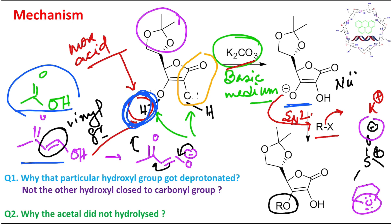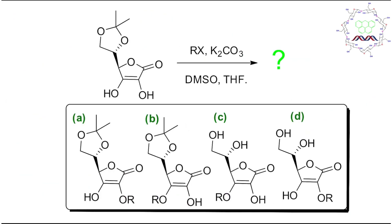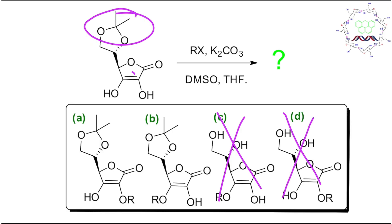To summarize: that particular hydroxyl is deprotonated because it is the vinylogous acid, making it more acidic compared to the alpha-hydroxy ketone derivative. Second, the acetyl did not hydrolyze because the medium is basic, so acetals are stable. Therefore, options C and D are eliminated since those groups remain unaffected, and the alkylation occurs on the vinylogous oxygen — making option B the correct answer.